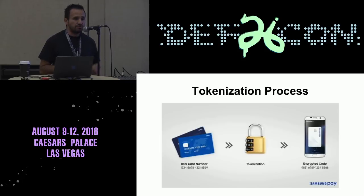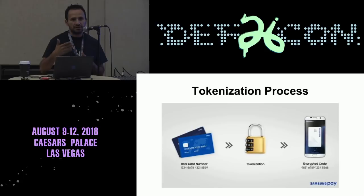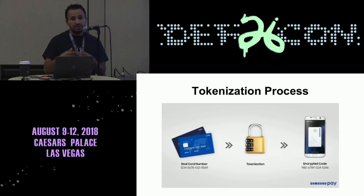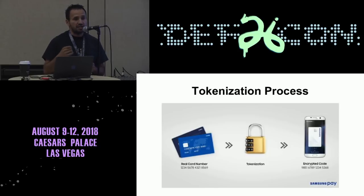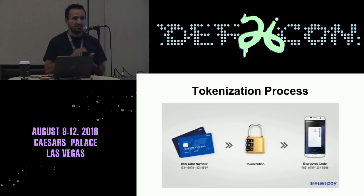A little bit about the tokenization process. Basically, the tokenization process is how you convert a physical card to a virtual credit card. This process is when you're making a payment with Samsung Pay, for example — every time you're making a purchase, the system is generating a new card. This is to avoid fraud attacks. For example, if someone is able to intercept a token, they can use it just one time, but not more times. The idea of this tokenization process is to add security to the physical cards — instead of using the physical card numbers, you're using scrambled data.